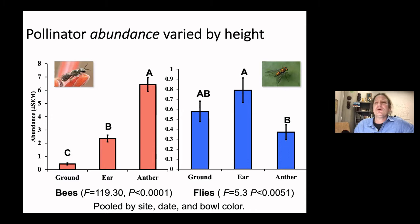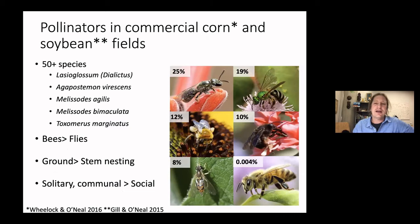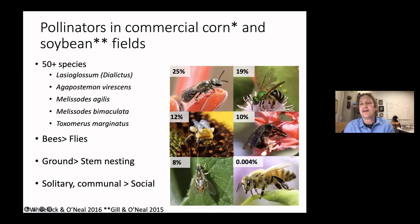We think the fly distribution has to do with their multiple feeding guilds. The adults visit flowers, but the larvae are often found where insect pests are — syrphid flies and dolichopodids lay their eggs where there are aphids, which tend to be at the ear level or along the stem. What was also remarkable was the diversity of bees we found in both corn and soybean fields. We've published this in a couple of places — we're at 50 species and it's an underestimate, because the majority of what we found have only been identified to the genus.